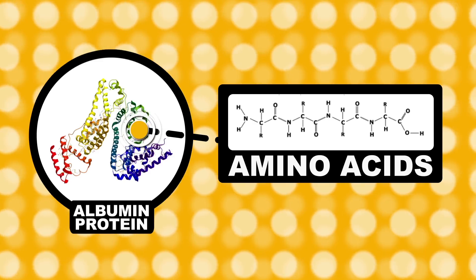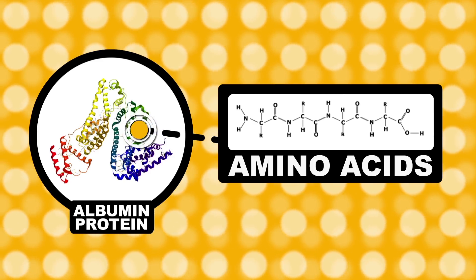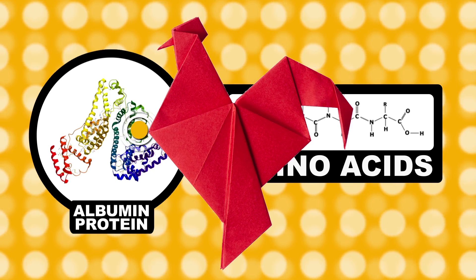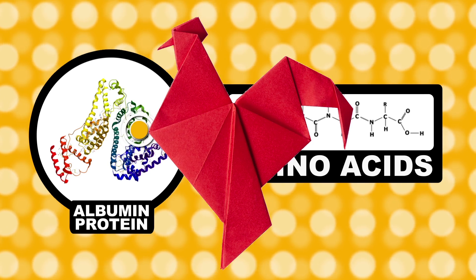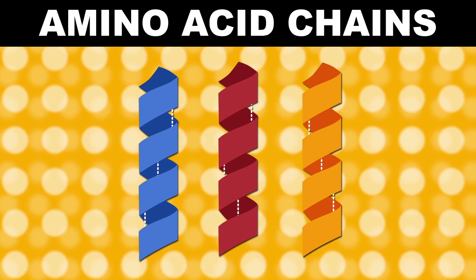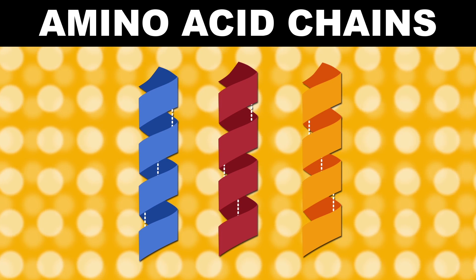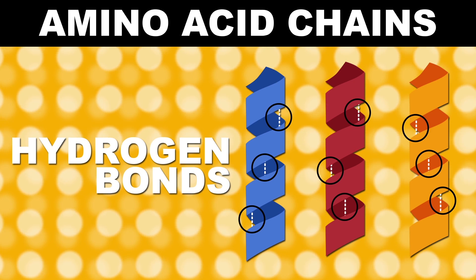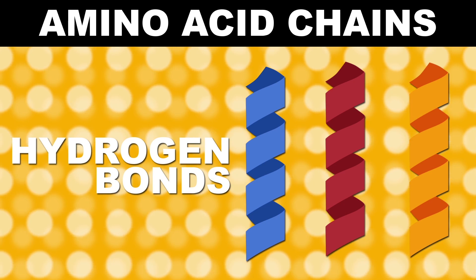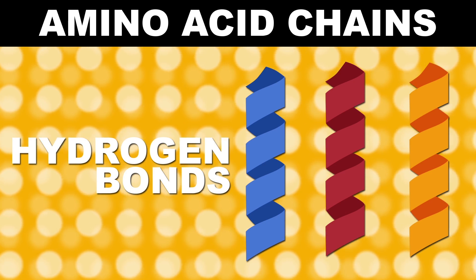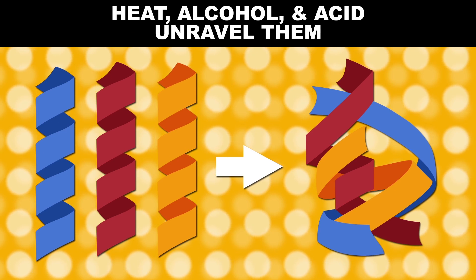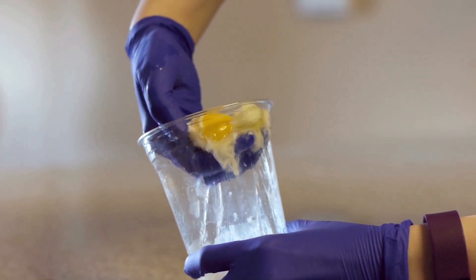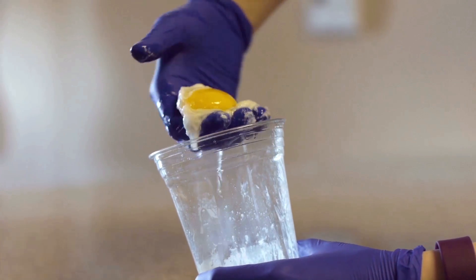Proteins are made of long chains of amino acids. Those chains fold up in a very specific way to give the protein both its shape and its function — it's a little like origami; every fold has its purpose. The folds in an amino acid chain are held together by a variety of chemical interactions, many of which are hydrogen bonds. These are weak chemical bonds that can be easily broken by heat, or other things like alcohol or acid. When the hydrogen bonds are broken, the amino acid chain can unravel, and the egg white turns — you guessed it — white.